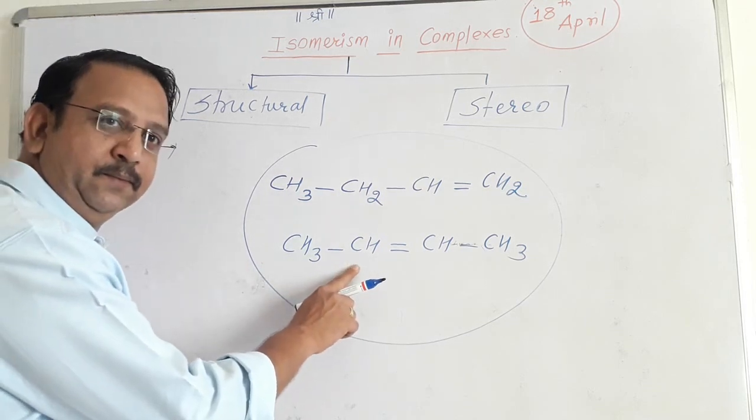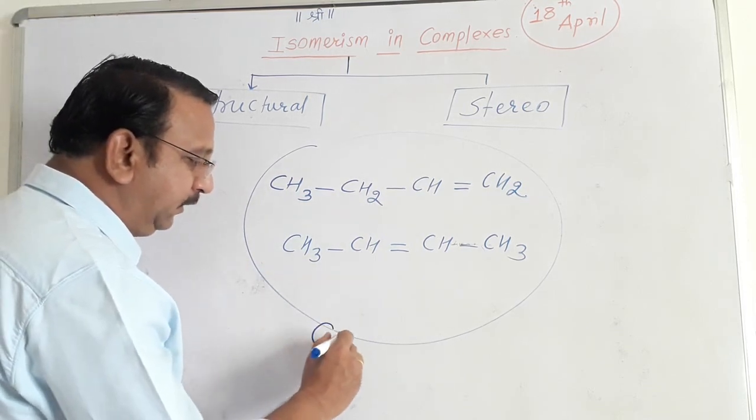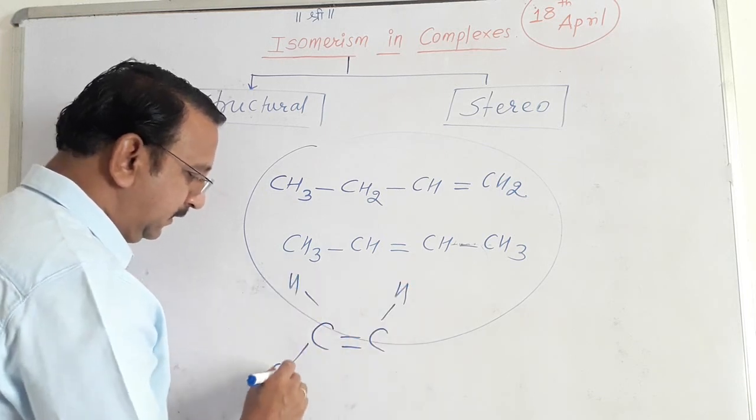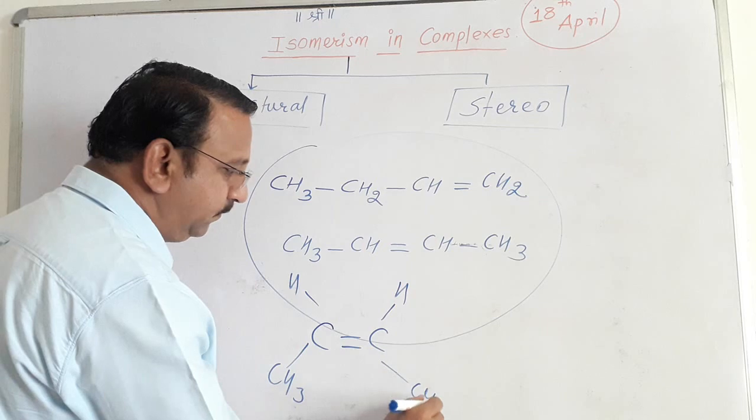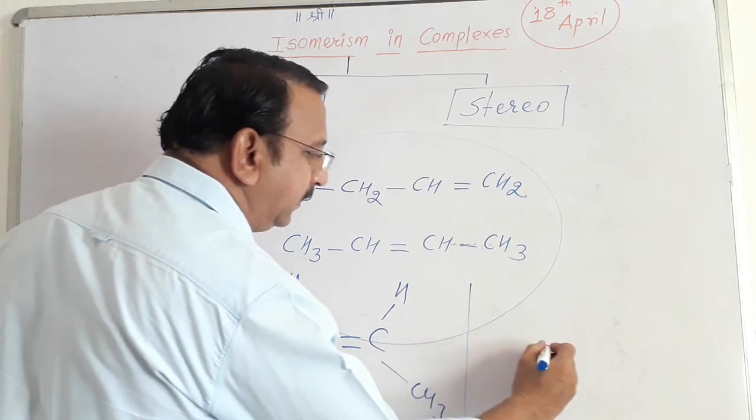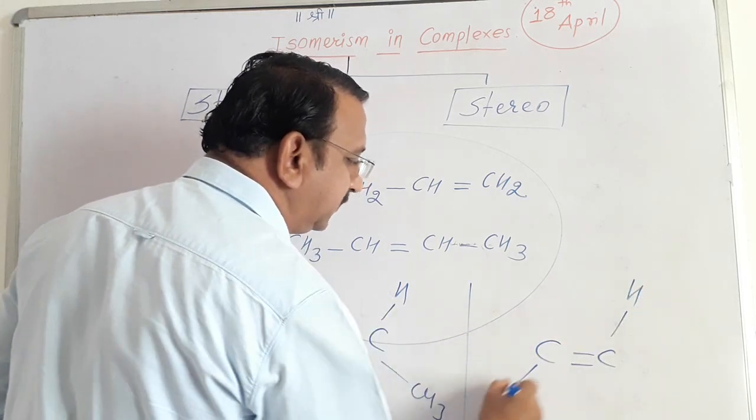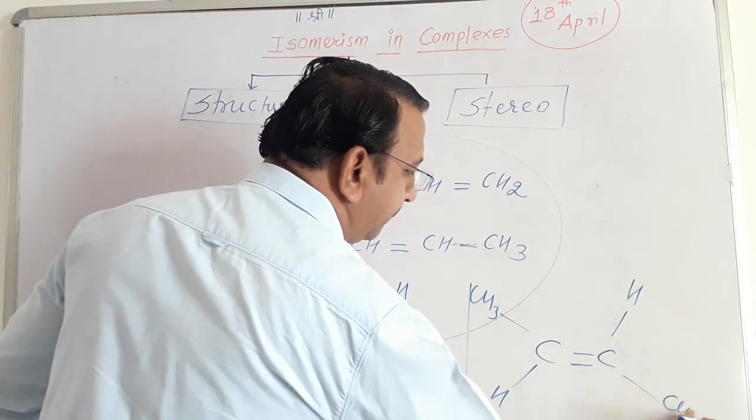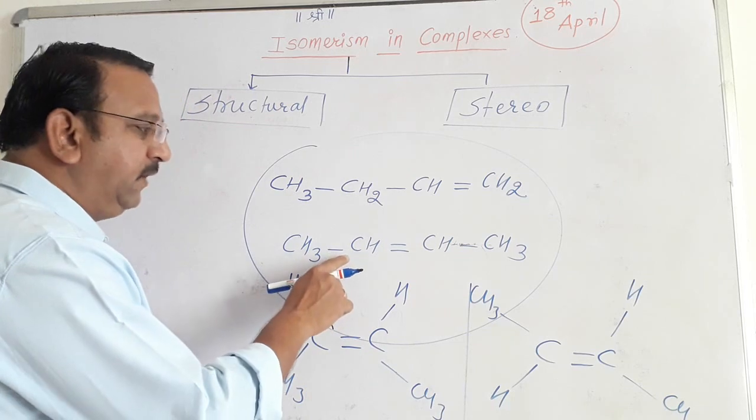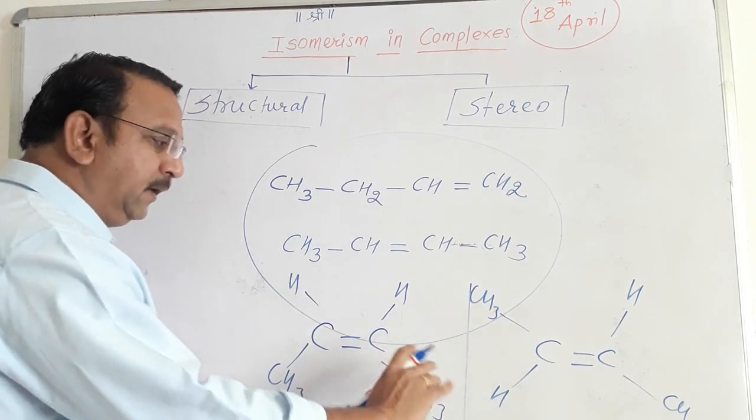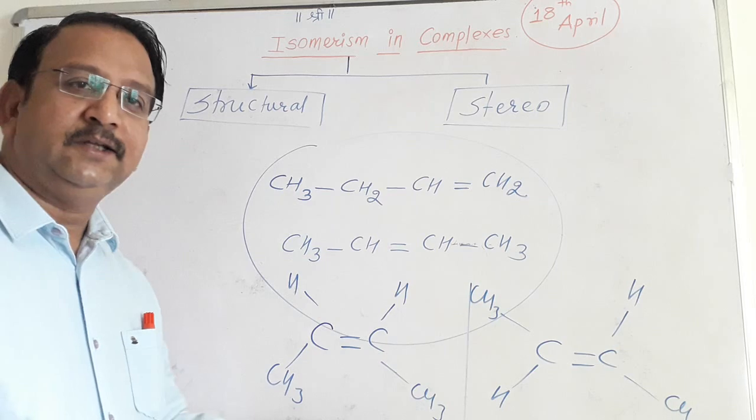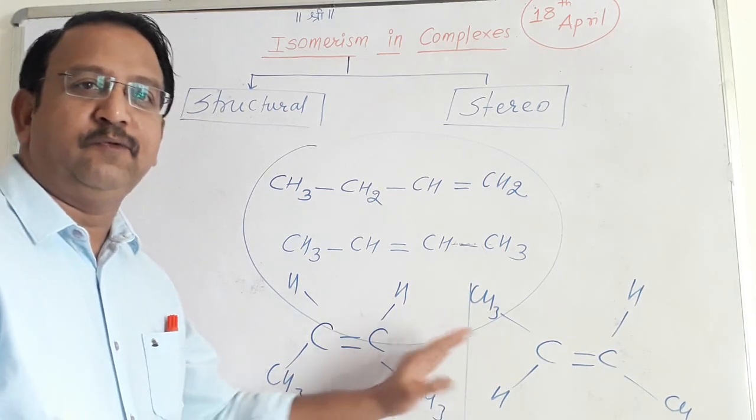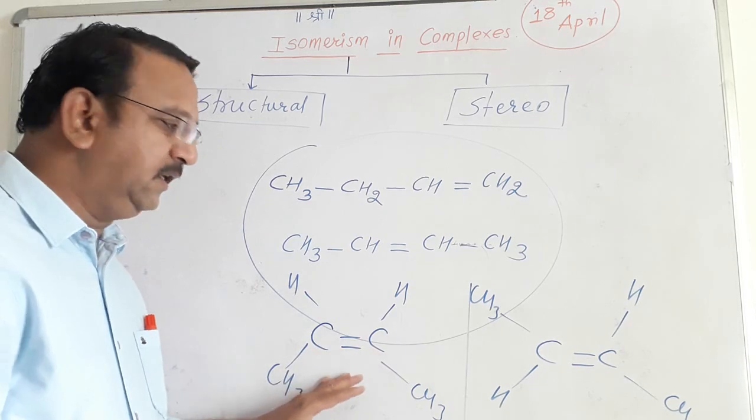But you know this particular compound but-2-ene can be written in two ways: hydrogen on one side, CH3 on one side with carbon-carbon double bond, hydrogen on opposite side and CH3 also on opposite side. When we write the same compound in two different geometries, we consider its three-dimensional arrangement, so they are stereo isomers of one another. We know it is cis and it is trans.